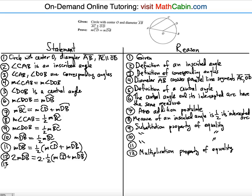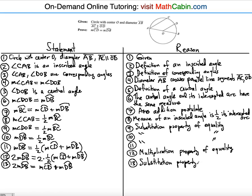Simplifying: the twos cancel on the right side, so we substitute to get: measure of arc DB equals measure of arc CD plus measure of arc DB. The reason is the substitution property of equality — the same reason as steps nine, ten, and eleven.